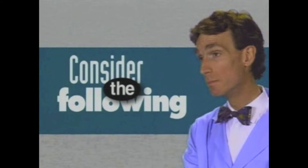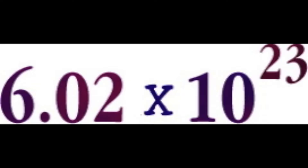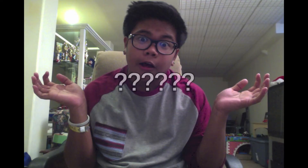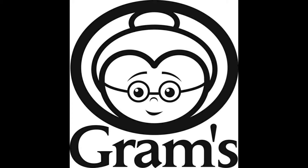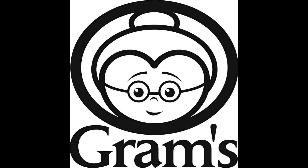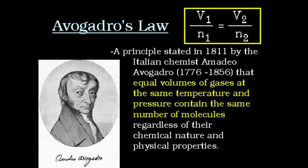Now let's talk about the discovery of Avogadro's number. Avogadro's number is 6.02 times 10 to the 23rd power. How did they get that number? Well, chemists were trying to bridge the gap between the invisible world of atoms, molecules, and grams. In 1811, Avogadro theorized that equal volumes of gases at the same temperature and pressure contain equal numbers of molecules.